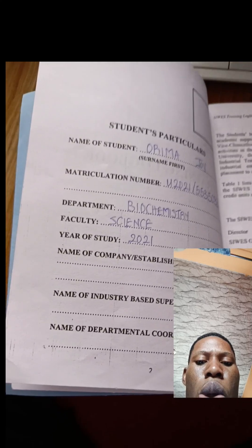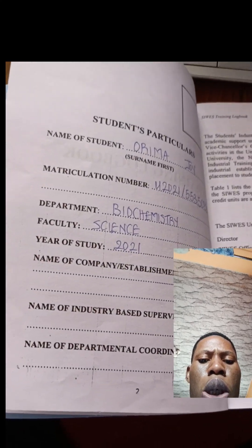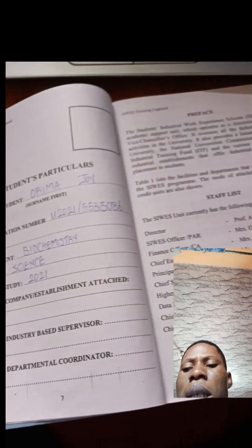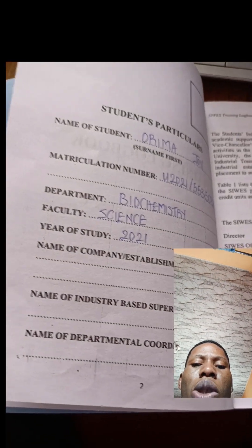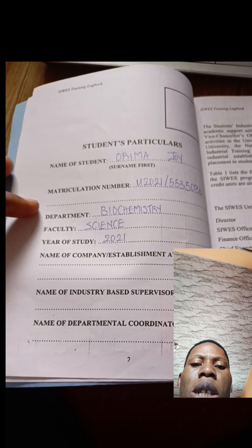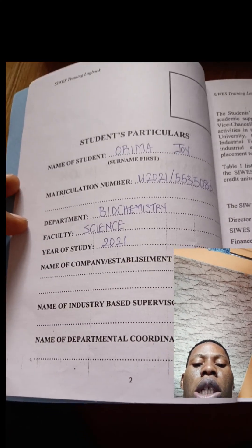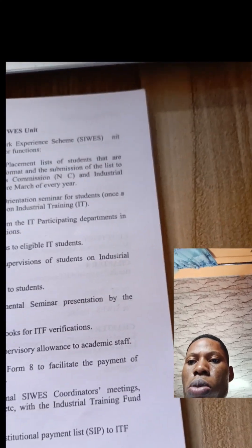The next field is name of industry-based supervisor. You are in your industry where you're doing your IT, and you have a supervisor there - that person's name should go there. Then there is name of departmental coordinator. They normally assign departmental coordinators, so if you don't know yours yet, you can go to your department and ask. There is always a departmental coordinator, so you write the name of that person there.